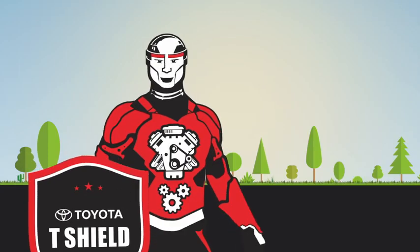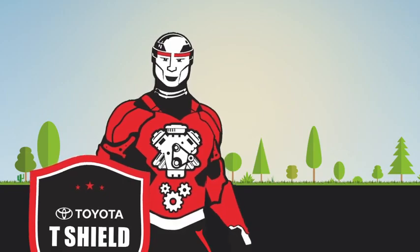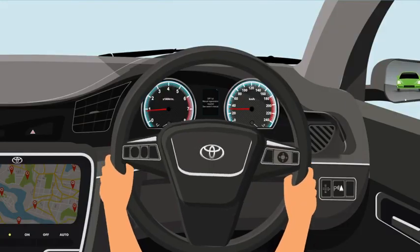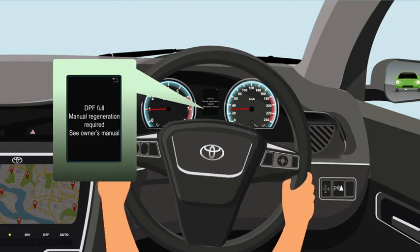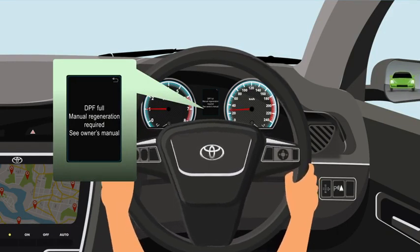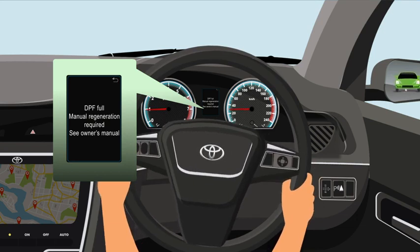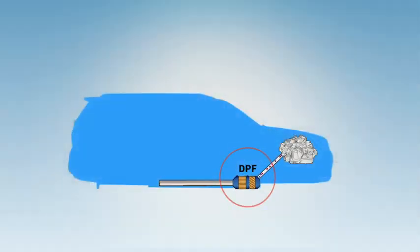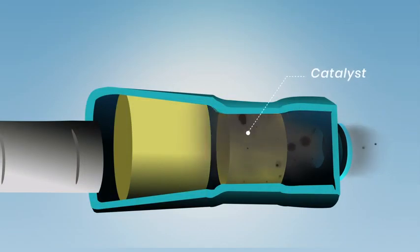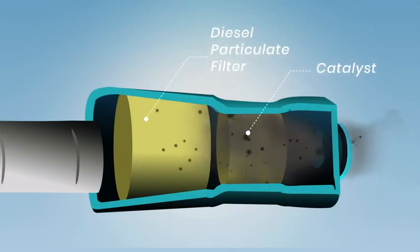Hi, I am T Shield. I shall guide you on what needs to be done when the DPF system warning message appears in your BS 6 diesel vehicle. This warning message is displayed due to the accumulation of carbon particles in the diesel particulate filter or DPF system. These carbon particles may need to be flushed out through a regeneration process.